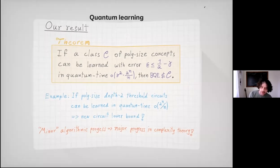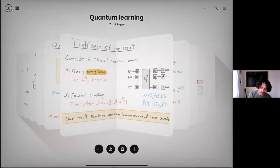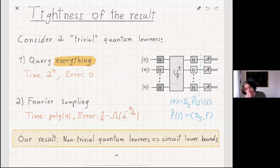I mentioned trivial learners, and I want to say something about the tightness of the result and what is a trivial quantum learner. There are two trivial quantum learners. The first one is the rather silly one where we query everything, and that means we actually query the entire truth table of f, and then we know it precisely, and there are no errors. This is the trivial setting, and it leads to one extreme, which means time two to the n.